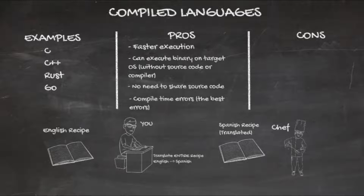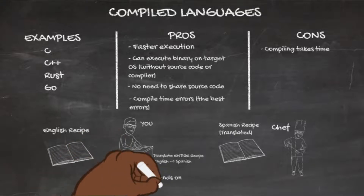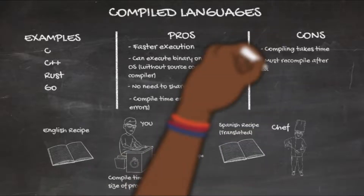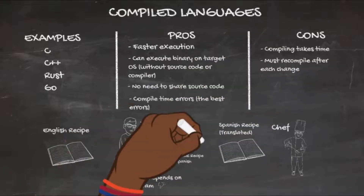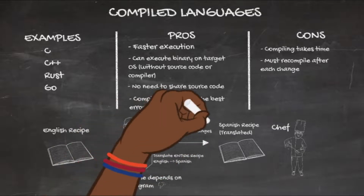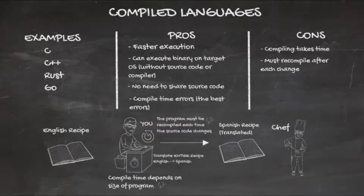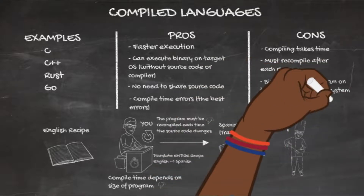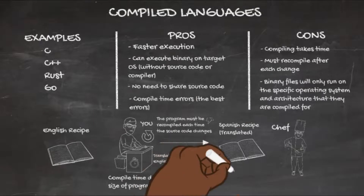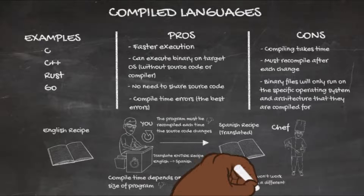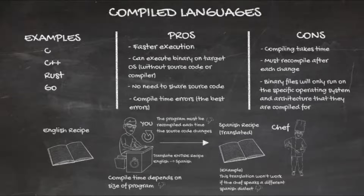As for the cons of compiled languages: compiling takes time, and that time is dependent on the size of your program. You also have to recompile after each change, since the compiled version reflects whatever the source code was at the time of compilation. Lastly, binary files will only run on the operating system they were compiled for, so if you want your program to run on multiple operating systems, you'll have to compile it multiple times — assuming your language or build tool supports specifying the target OS and architecture.